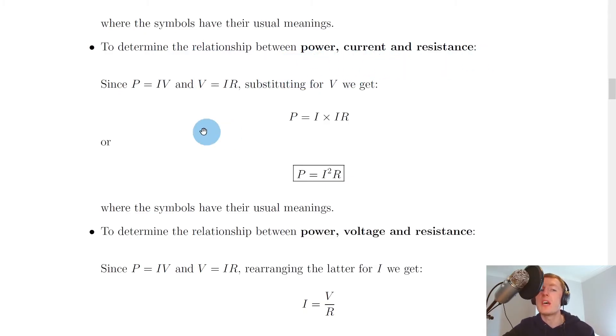It then says to determine the relationship between power, current, and resistance, we can use the equation for Ohm's law to help us out. So it says since P = IV, which we've just seen, and V = IR, substituting for V we get P = I × IR.